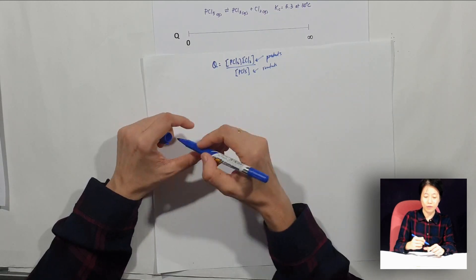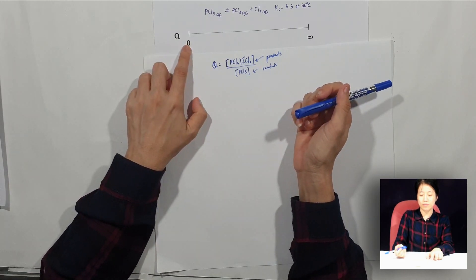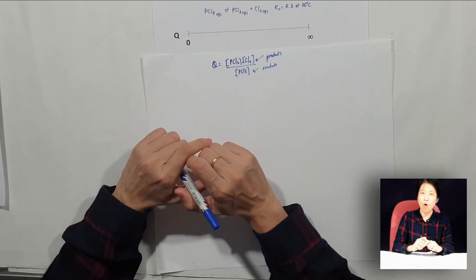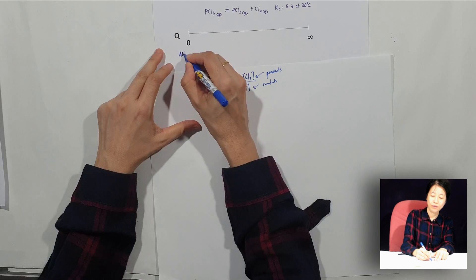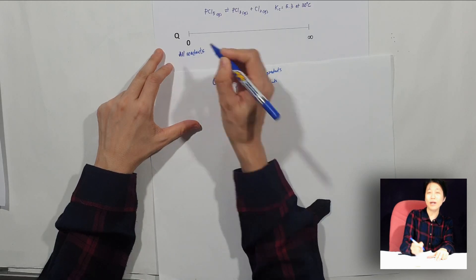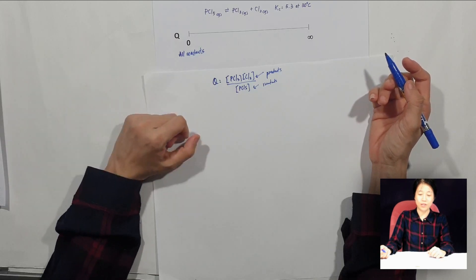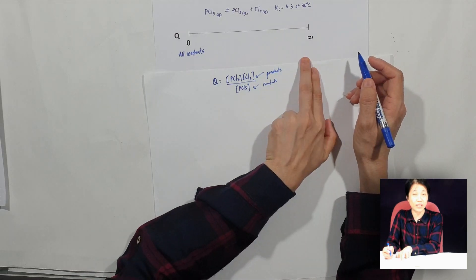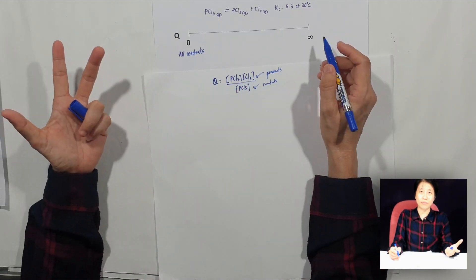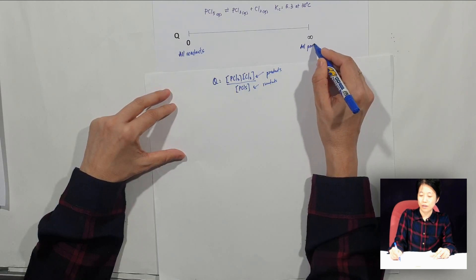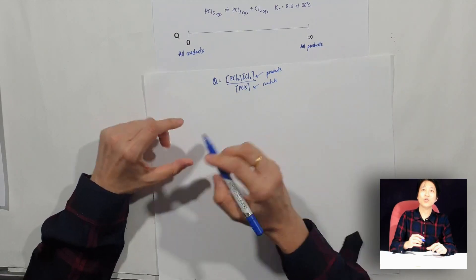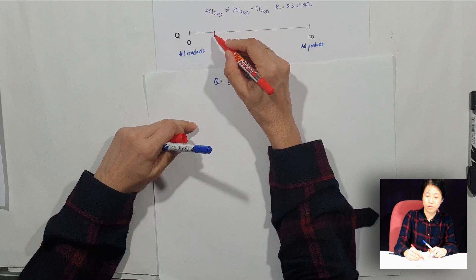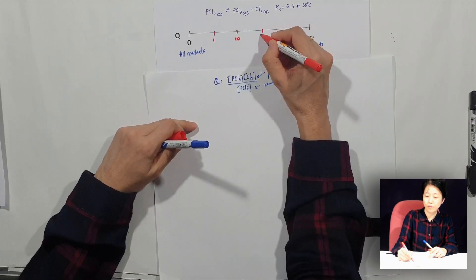So what happens when Q is equal to zero? It means we are just at the starting point of a reaction and there are all reactants, whereas there is not even any products produced. So that is the first stage. And then when the reaction progressed to the most extreme part, then we have all the products produced and there's no more reactants.